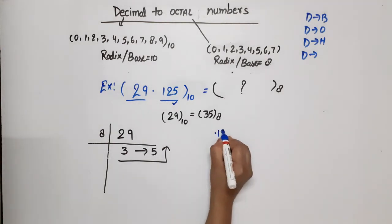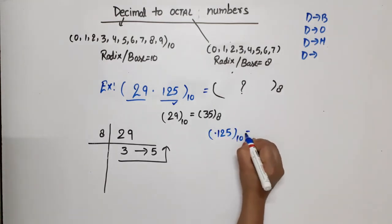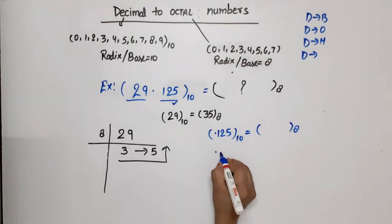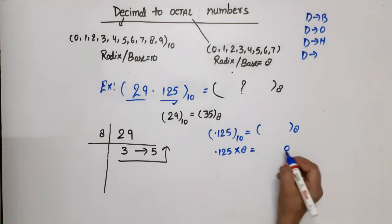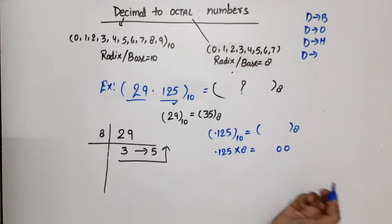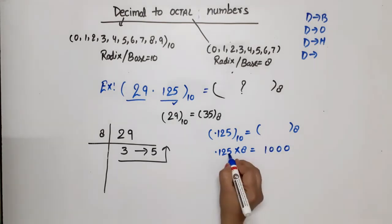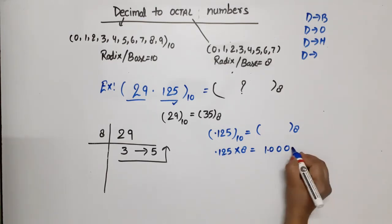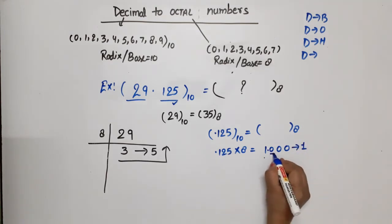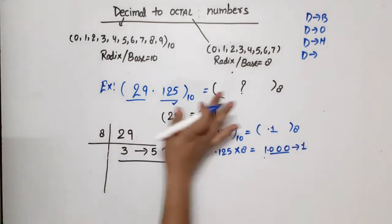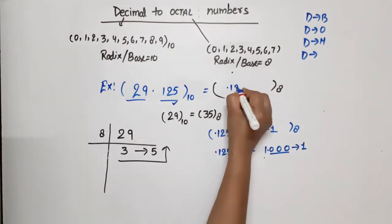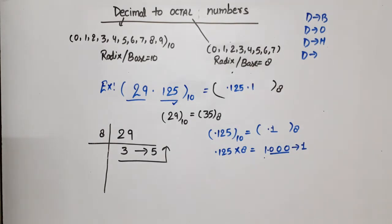Now for the fraction part, we convert 0.125 in base 10 to base 8. We multiply 0.125 × 8 = 1.0. The integer part is 1. Since the fractional remainder is 0, we stop. Reading up to downward, 0.125 in decimal equals 0.1 in octal.